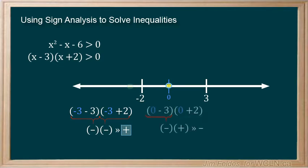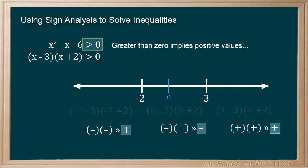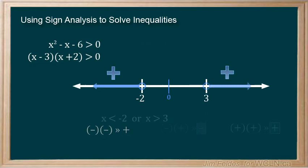Then negative times positive nets us a negative in the middle interval. And two positives, of course, are positive. Since our inequality is asking for values greater than zero, we only need the positive intervals to show in our graph and to write in interval notation.